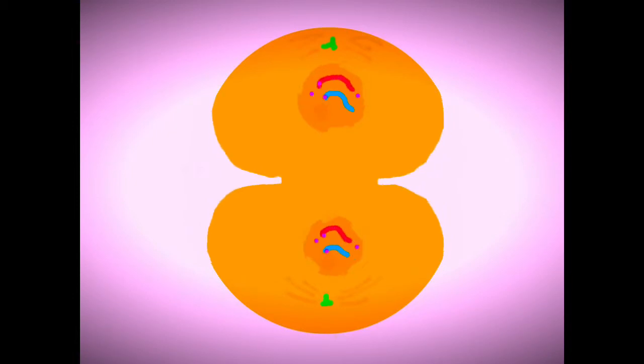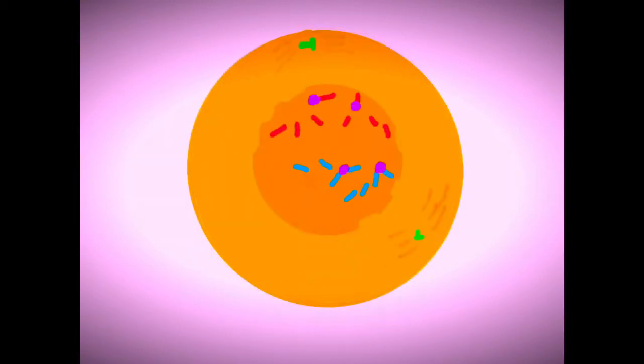The cell membrane begins to constrict at the center. The cell membrane completes constriction in telophase. Nuclear membrane forms around the separated chromosomes. Mitosis is completed. There are now two cells with the same structures. They are called diploid daughter cells.